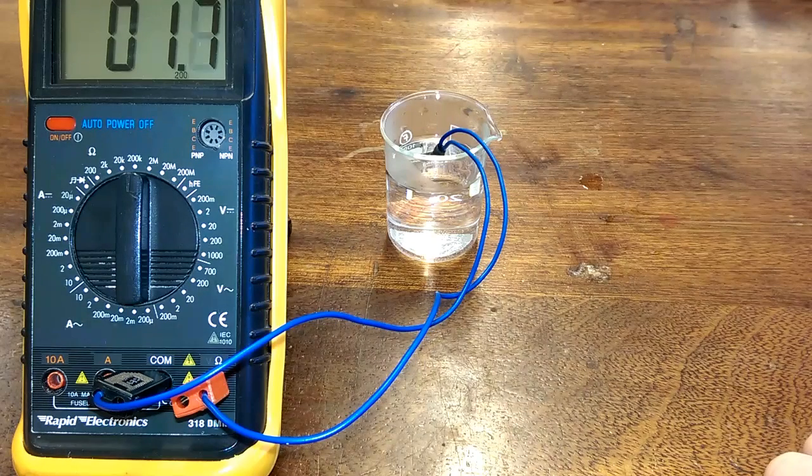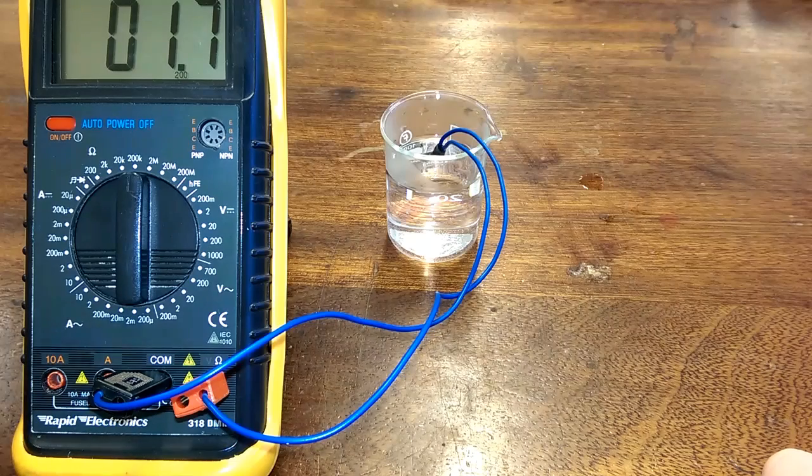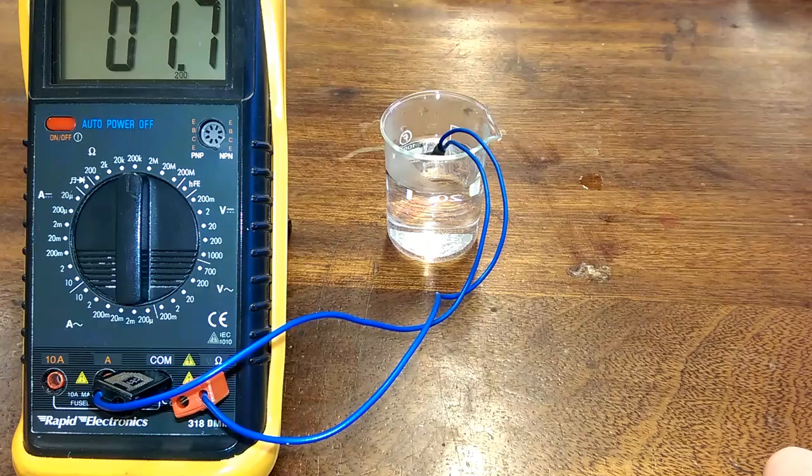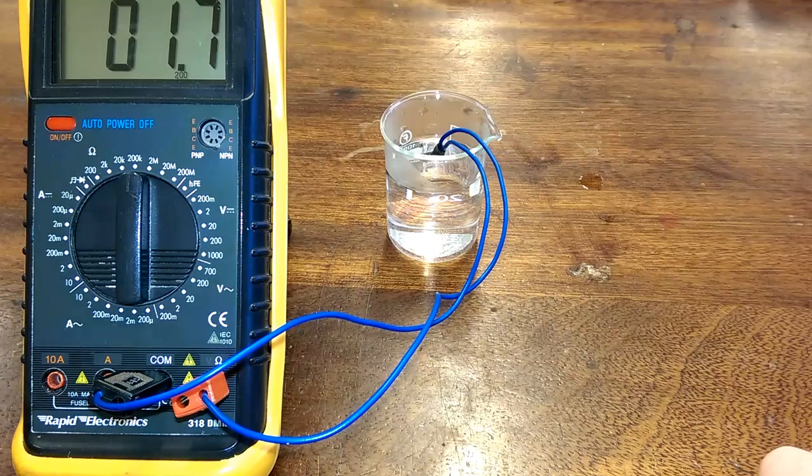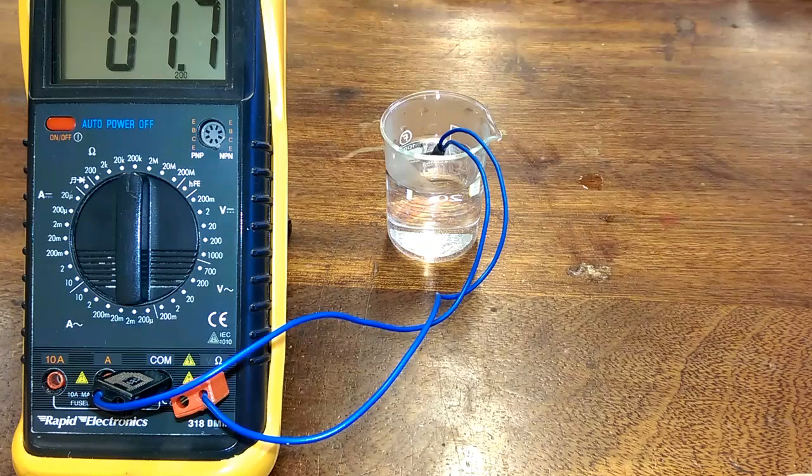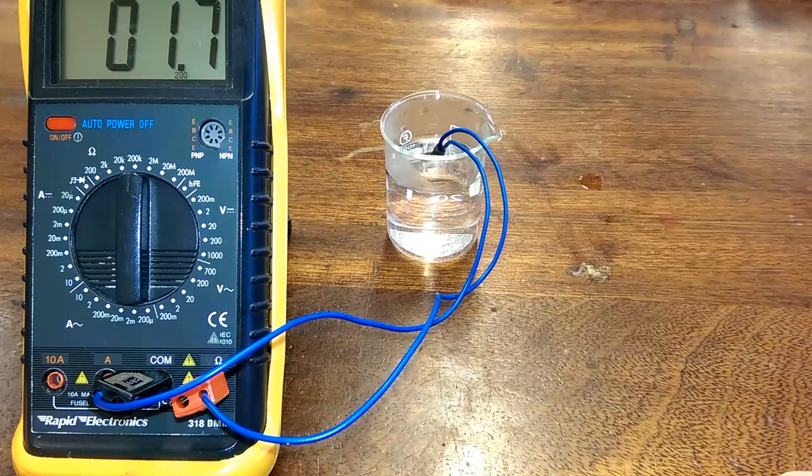Now, that's the opposite way around to most other conductors. When conductors heat up, their resistance increases. Now, a thermistor is specially designed so that when it heats up, the resistance decreases. And that has lots of applications in real world.